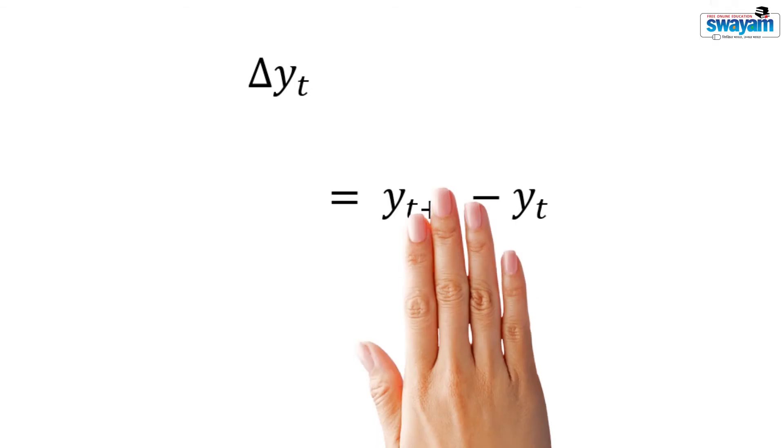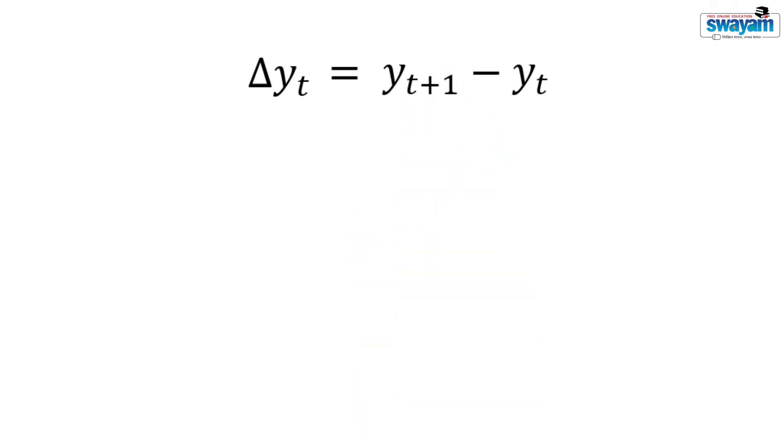If delta yt is the change in y at time t where t is the current period, we can write delta yt is equal to yt plus 1 minus yt. This is called the first difference. That is, the change in y in current period will be equal to the difference between the value of y in immediate next successive period and the value of y in current period.